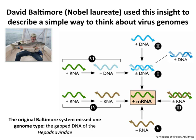This is the Baltimore scheme. It's really brilliant because if I just gave you double-stranded RNA virus, you could tell me exactly what has to happen when that RNA gets into a cell, if you just think mRNA is the goal — that's what we have to reach.